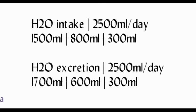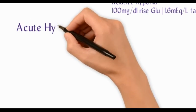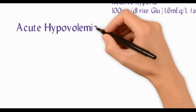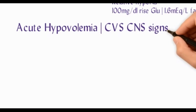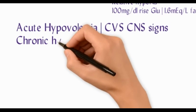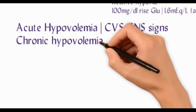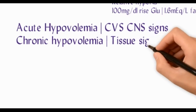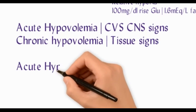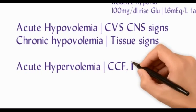Acute hypovolemia, as in shock, presents with CVS and CNS signs. Chronic hypovolemia presents with tissue signs. Acute hypervolemia presents with congestive cardiac failure and pulmonary edema, more commonly seen in the elderly as opposed to fit young individuals. Chronic hypervolemia presents as anasarca.